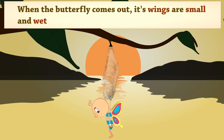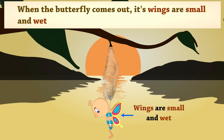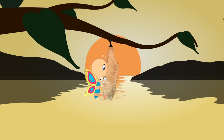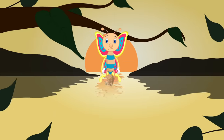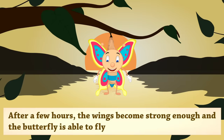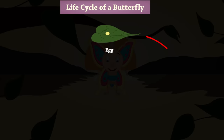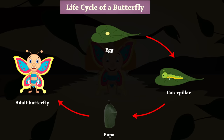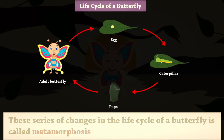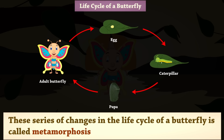When the butterfly comes out, its wings are small and wet. The butterfly pumps fluids into its wings to make them strong and to expand. After a few hours, the wings become strong enough and the butterfly is able to fly. These series of changes in the life cycle of a butterfly is called metamorphosis.